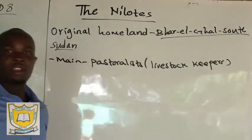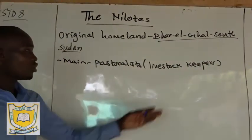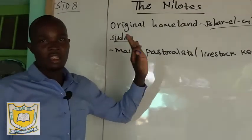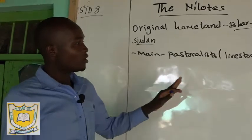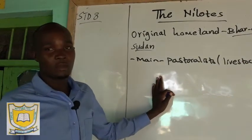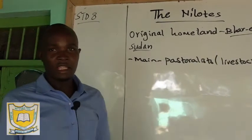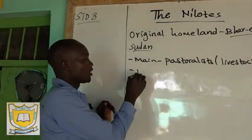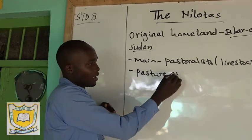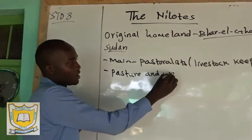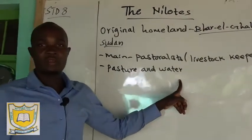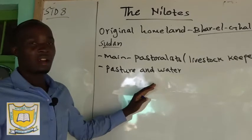These people kept livestock. When we talk about livestock we are looking at animals like sheep, goats, and cows. Those are typical livestock. So the main economic activity of these people was livestock keeping. The main reason for migration was that they were looking for pasture and water for the animals.